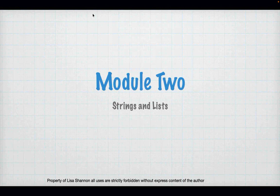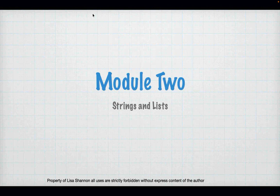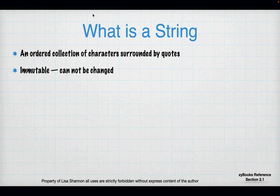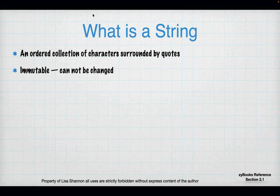Tonight we are talking about strings and lists, because a string is a list. And in Python, just about everything is a string. Python assumes a string unless you tell it otherwise. So what is a string? It's just an ordered collection of characters surrounded by quotes. That is all a string is. If you are writing a sentence and you surround it by quotes and you add it to a variable, you have a string.